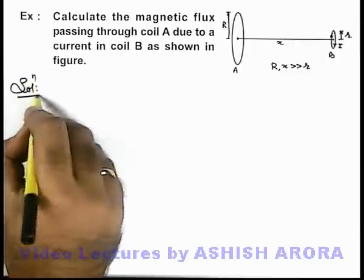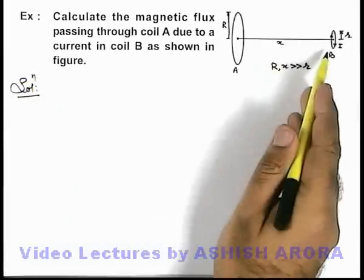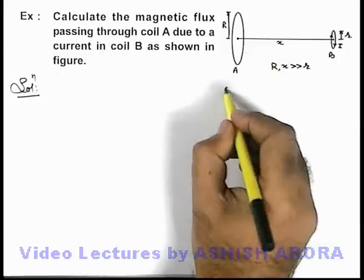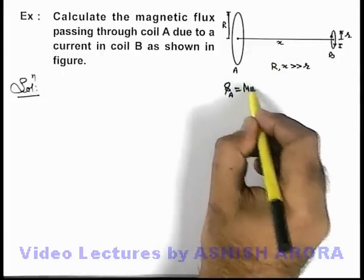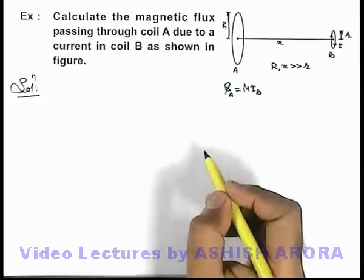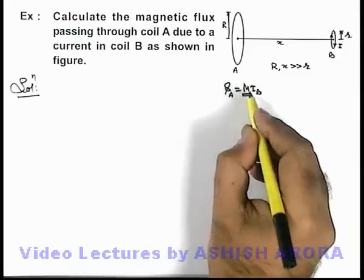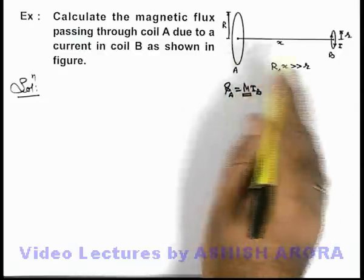In this situation, if we know the value of mutual induction between the two coils then the flux through coil A can be directly written as M multiplied by current in coil B. And we need to calculate first the value of mutual induction between the two coils.